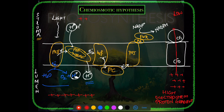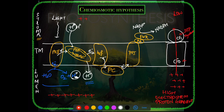The chemiosmotic hypothesis involves proton gradient leading to ATP production. Looking at the full representation: thylakoid membrane with stroma outside and lumen inside. PS2 traps light, electron gets excited toward Plastoquinone. Simultaneously, water undergoes photolysis, electrons return to PS2, and additional protons accumulate in the lumen. PS2 sends the electron to Plastoquinone.